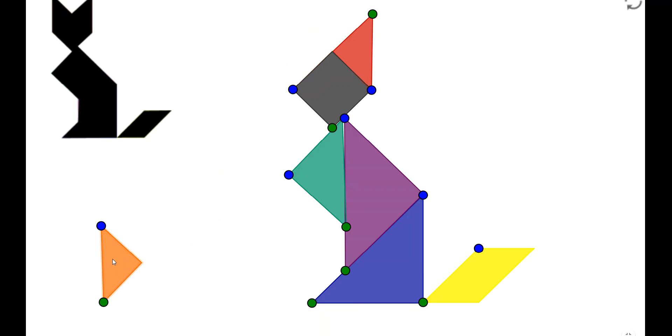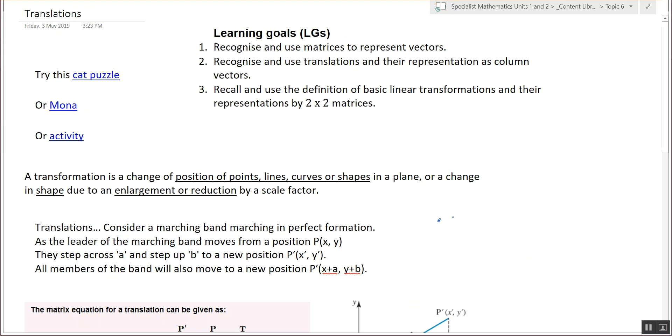So then you put all - say this triangle - you put all the X's and Y's into a matrix, and you can multiply that matrix by a translation matrix and it'll give you the new point when it translates. Say you move across a and up b, the original point is X,Y, so you could write it as a matrix like this or you could write it as a matrix like that.